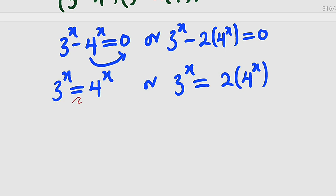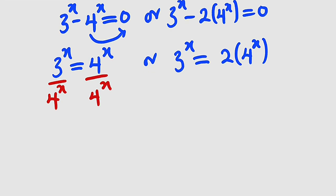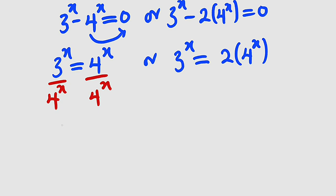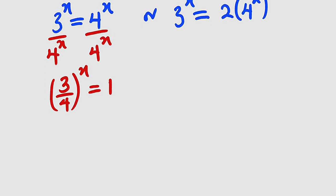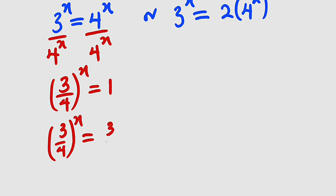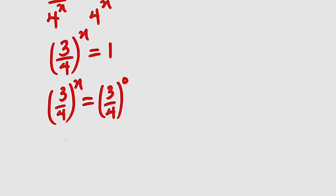From the first equation, we divide both sides by 4 to the power of x. According to one of the laws of indices, we can assign a single exponent since they have the same exponent. This gives us 3 over 4, whole to the power of x, equals 1. Remember that 1 can be expressed as any number raised to the power of 0. So we can write 1 as 3 over 4 to the power of 0. Since the bases are the same, we equate the exponents: x equals 0. This is one of the solutions.